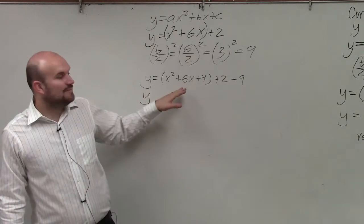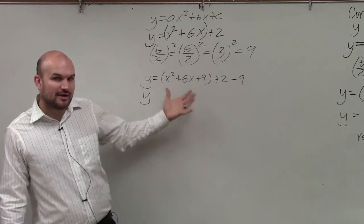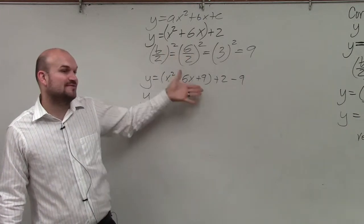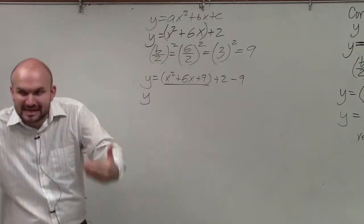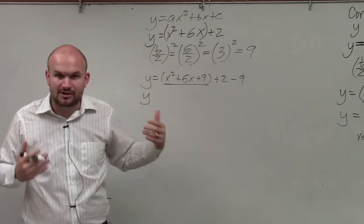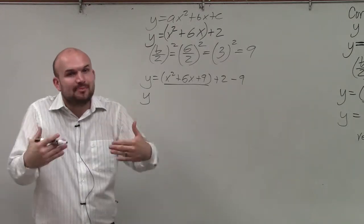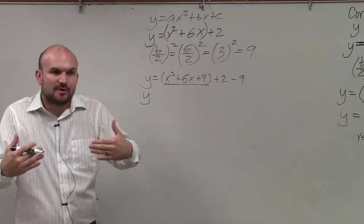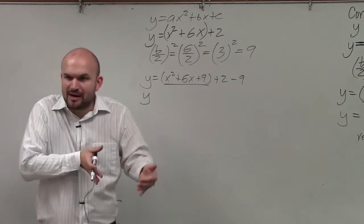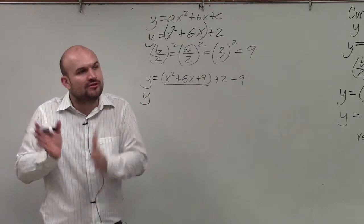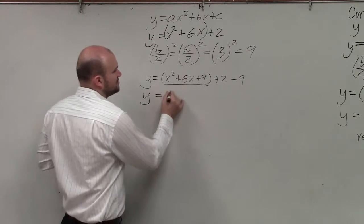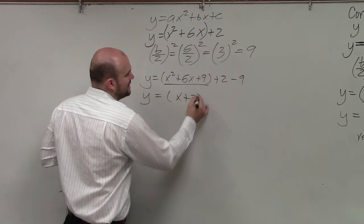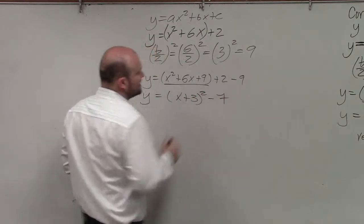So now when we look at this, the reason why we created those parentheses and why we did b divided by 2 squared and added inside there is because what we have now done, ladies and gentlemen, is created a perfect square trinomial. And we can simplify. We can factor perfect square trinomials to binomial squares, which now is going to convert our equation from standard form to vertex form. So therefore, this becomes x plus 3 squared minus 7.